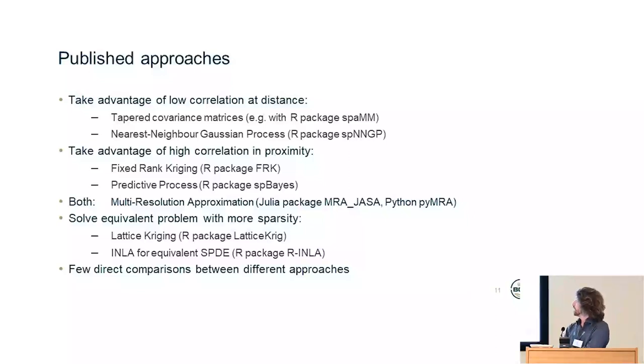Other approaches solve an equivalent problem but in a form that has high sparsity. So lattice kriging does kriging on a grid in which, because the system is homogeneous with position and invariant with position, then the precision matrix ends up being sparse. Or you can use the integrated nested Laplacian approximation to solve the stochastic partial differential equation, which is equivalent using the R package INLA. And Catherine's looking a bit into how INLA's doing that, as well as some other things.